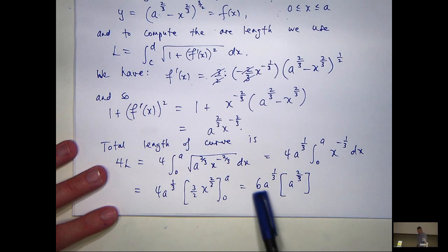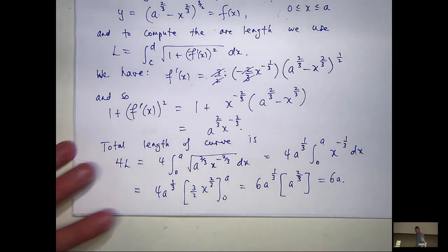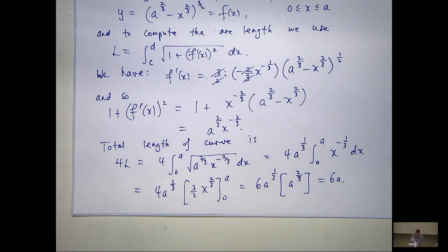So we get 6a — the same answer that we got for Part A. That question is designed to show you that you can do these calculations sometimes two different ways depending on what you prefer.